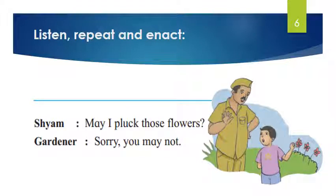In the last picture, there is Sham and a gardener. Sham is asking the gardener, 'May I pluck those flowers?' The gardener replied, 'Sorry, you may not.' So the gardener is not allowing Sham to pluck the flowers.